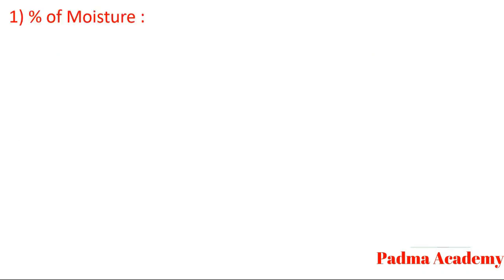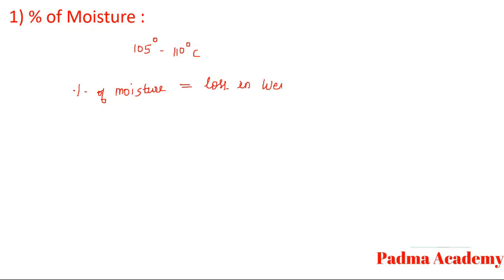The percentage of moisture is calculated by heating the coal sample at around 105 to 110 degrees Celsius for one hour. Then the percentage of moisture is equal to loss in weight upon the weight of coal into hundred.